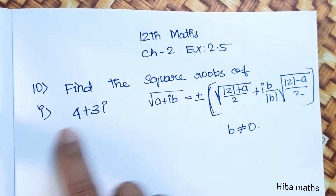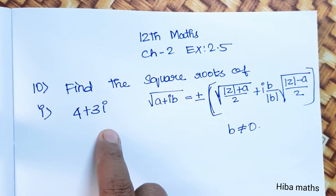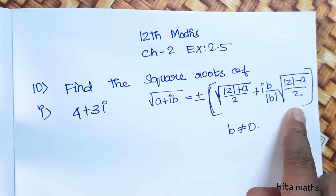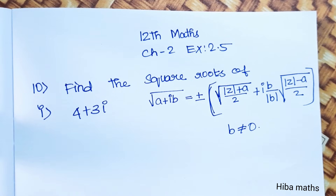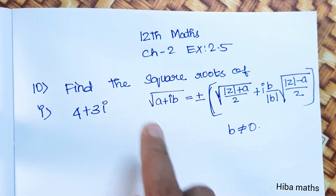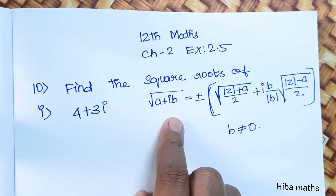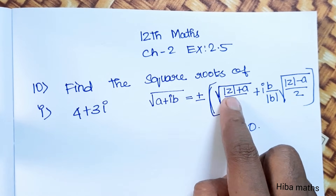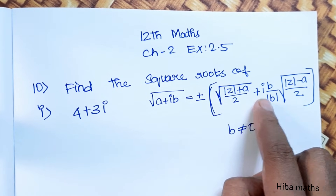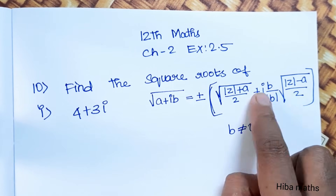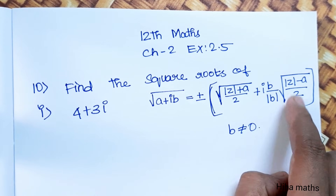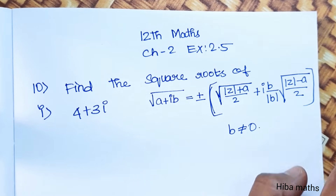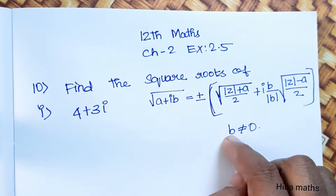Find the square root of a complex number. For a complex number, we use a formula: the square root of (a + ib) is equal to plus or minus root of (|z| + a) / 2, plus i times (b / |b|) times root of (|z| - a) / 2, where a equals minus a and b equals 0.